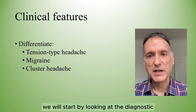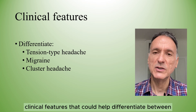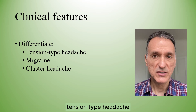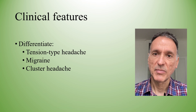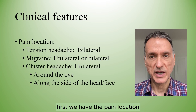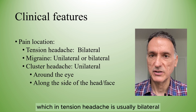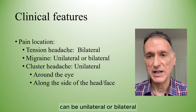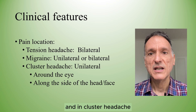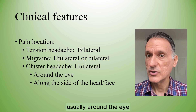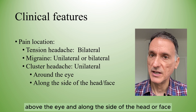We will start by looking at the diagnostic clinical features that could help differentiate between tension type headache, migraine and cluster headache. First we have the pain location, which in tension headache is usually bilateral. In migraine it can be unilateral or bilateral, and in cluster headache it is unilateral, usually around the eye, above the eye and along the side of the head or face.